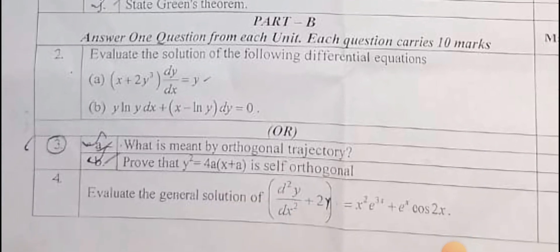Third one: what is meant by orthogonal trajectory? Direct definition. Prove that y² = 4a(x + a) is self-orthogonal. It is an expected problem.